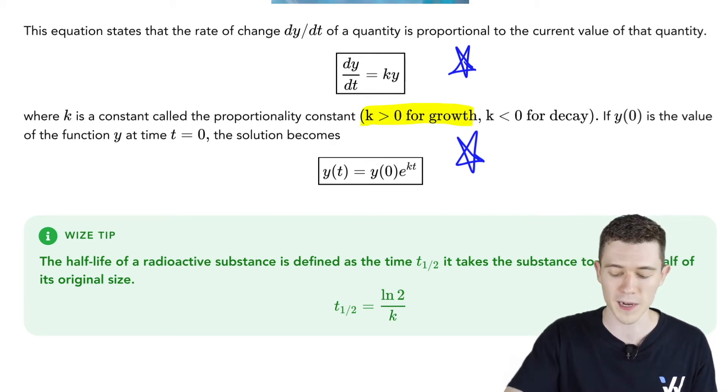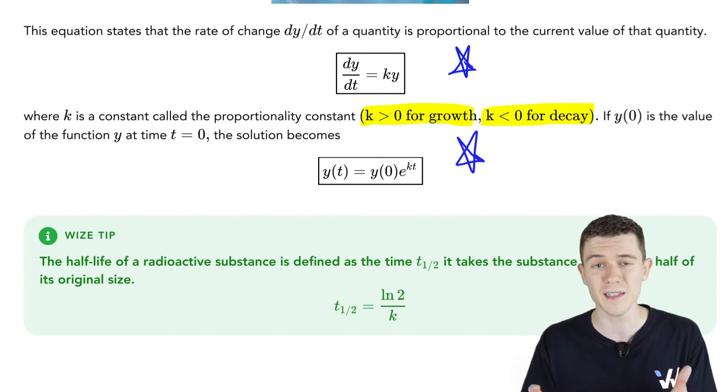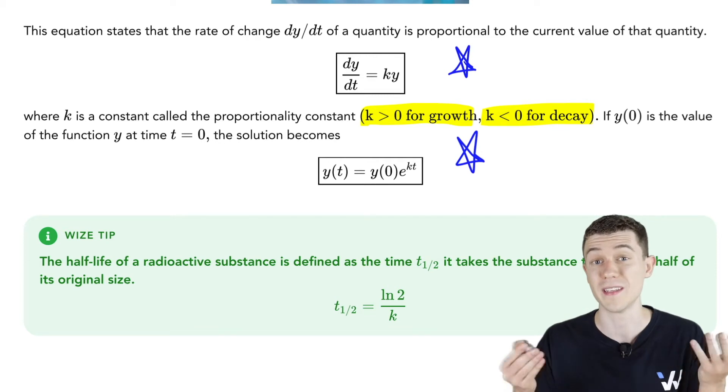We're growing if k is positive, and we're decaying if k is negative. y(0), or y naught, that's the value of the function y at time 0, or you might call it the initial population.